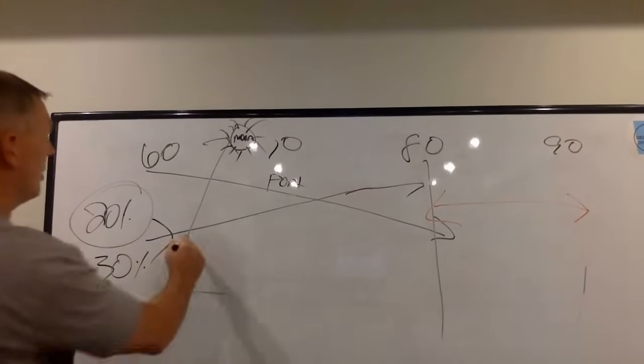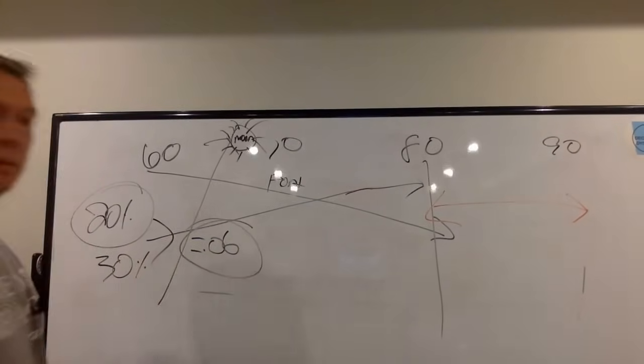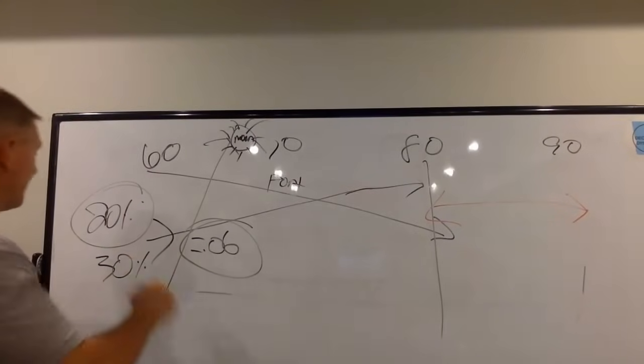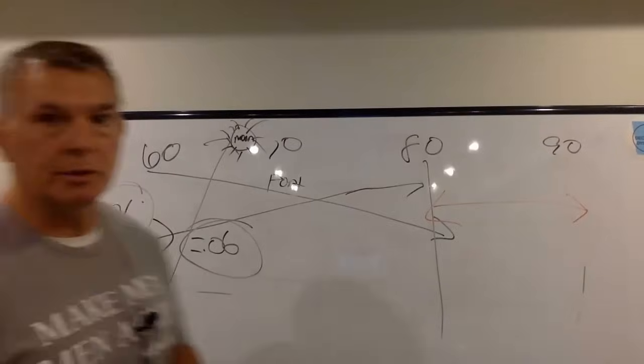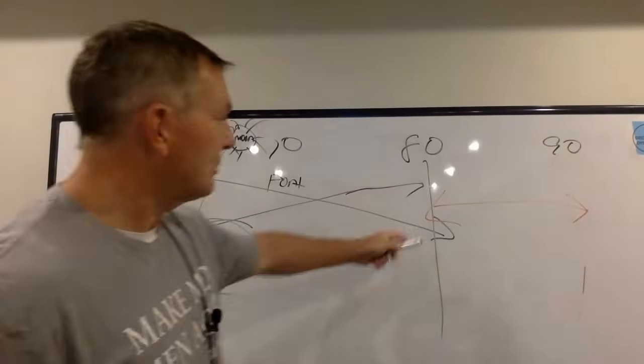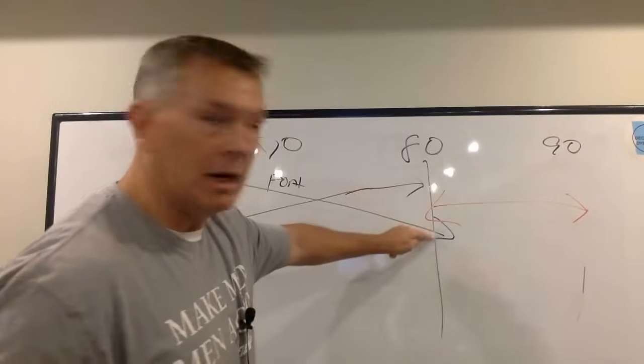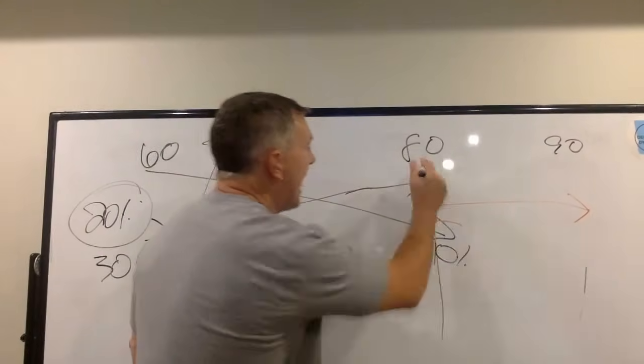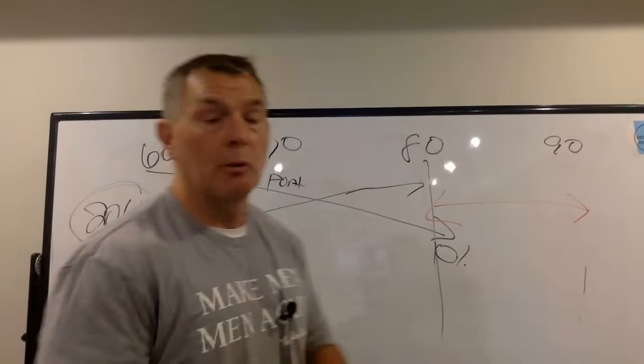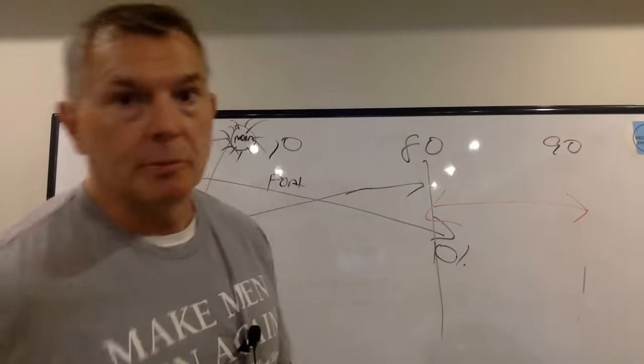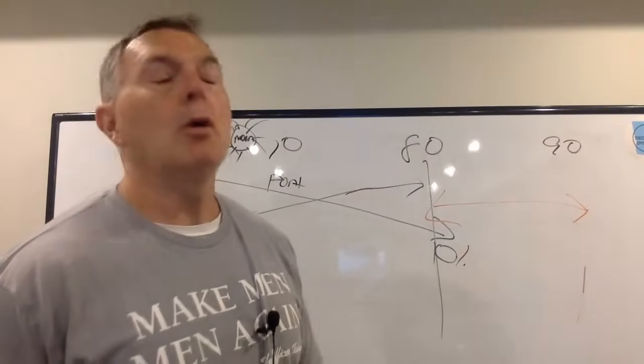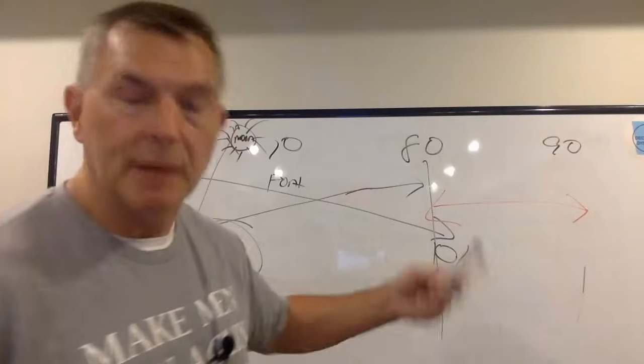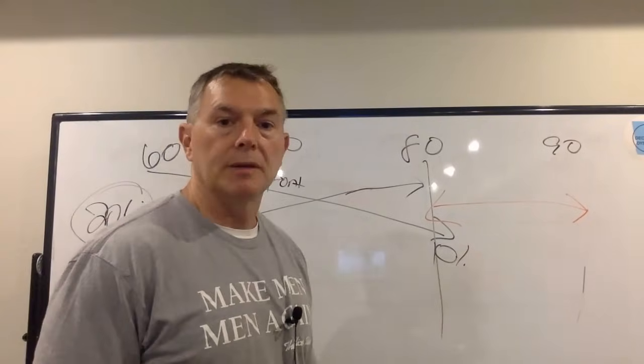We multiply those together: 0.2 times 0.3 equals 0.06. We have a six percent chance that we'll retire to a bad market and live for more than 20 years of retirement. We'll round up to say 10 percent, which means 90 percent of the time that won't be us.